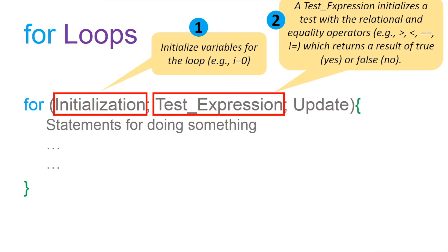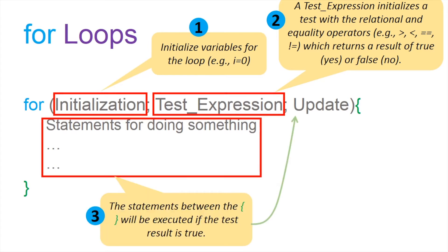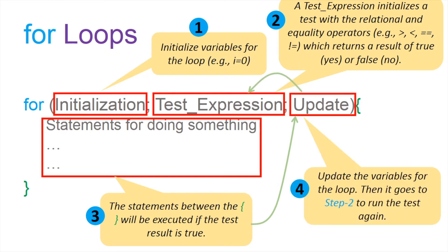Then if the test passed, we will execute the body part of the statements here. And after that, it goes to an updating session where you can update some of the variables. Like in the while loop, the while loop puts the updating inside the statement. However, you can do it in the for loop by putting them here. They're just equivalent.